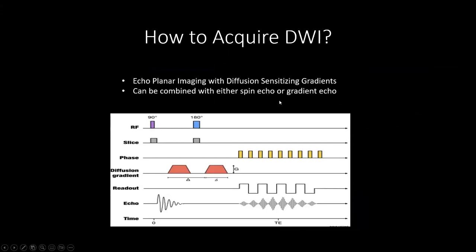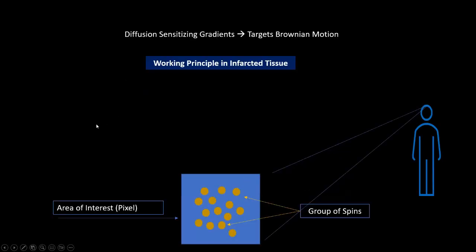So diffusion-weighted imaging can be done using a sequence called echoplanar imaging. Here, there will be a special set of gradient application called diffusion-sensitizing gradients. And this can be incorporated into either a spin echo or a gradient echo pulse sequence. Let's observe the mechanism of action. So let's assume that this is a stroke patient in which certain portion of the brain tissue is underwent infarction.